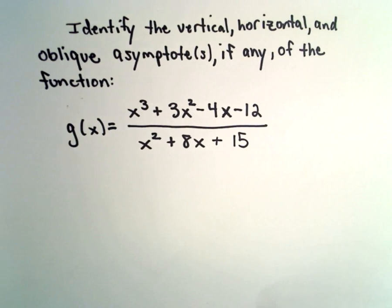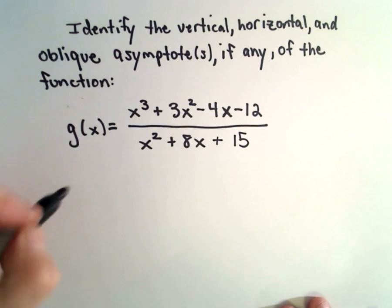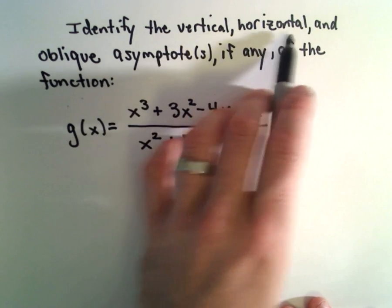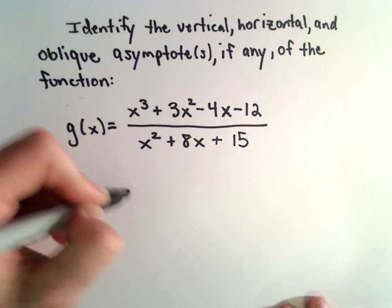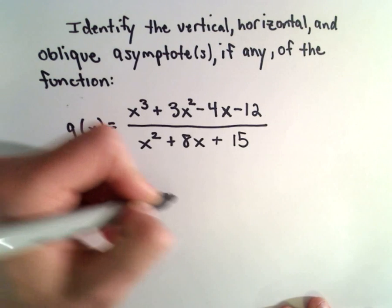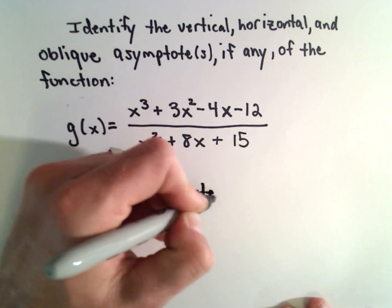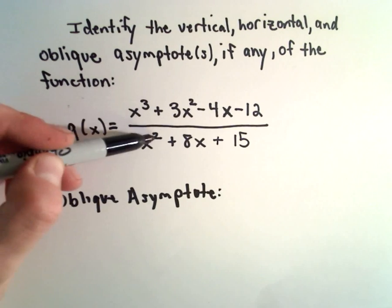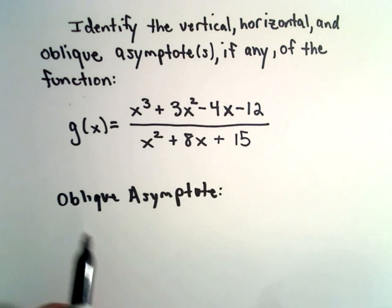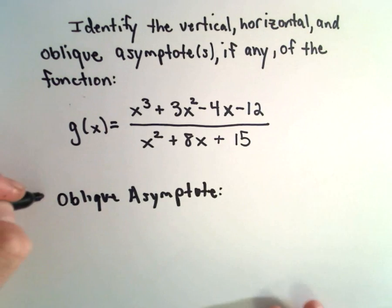The first thing I'm going to notice is that we don't have any horizontal asymptotes, but we do have an oblique asymptote. We know there's an oblique asymptote because the degree of the numerator is exactly one larger than the degree of the denominator.